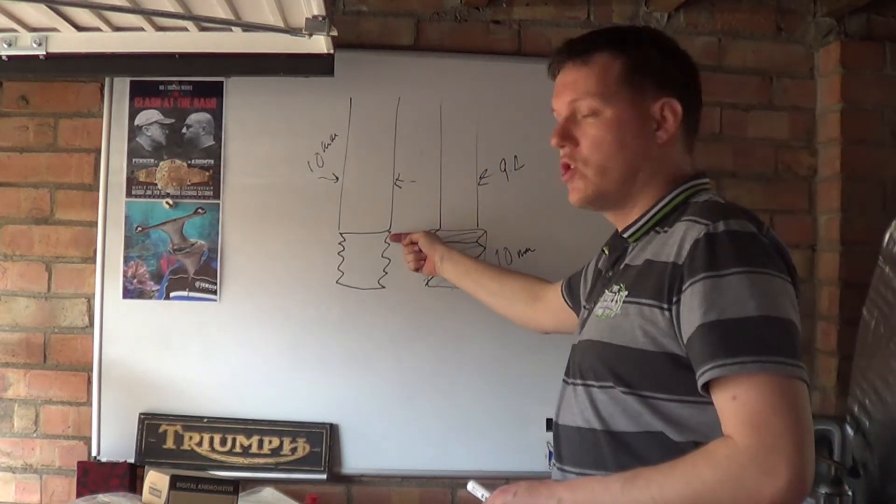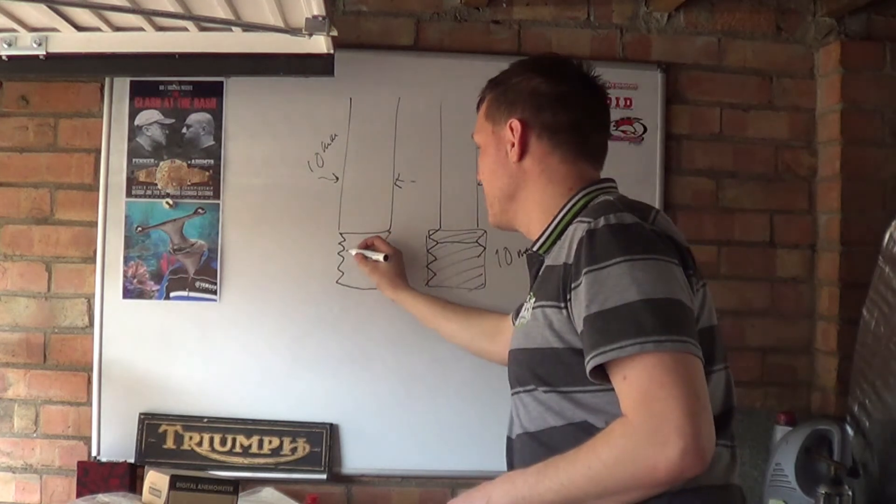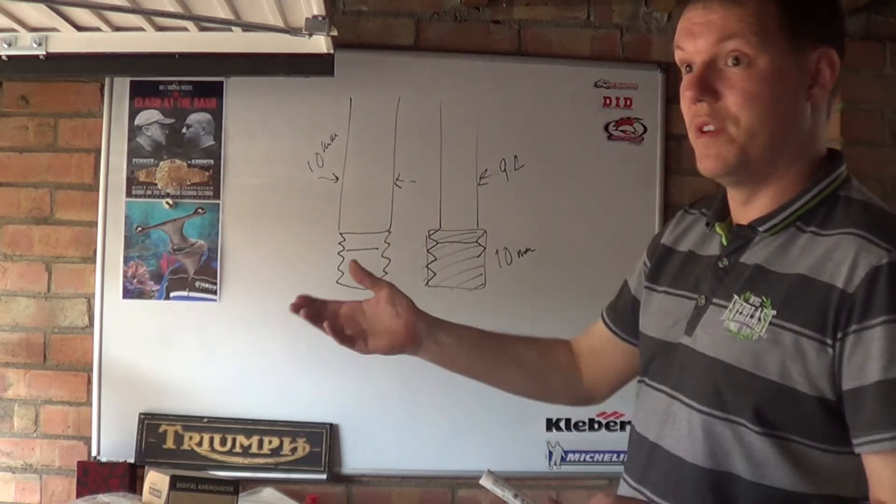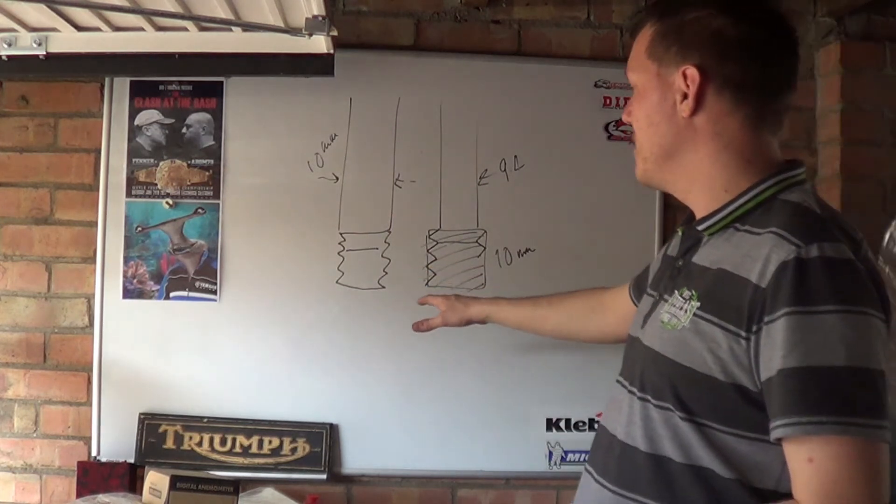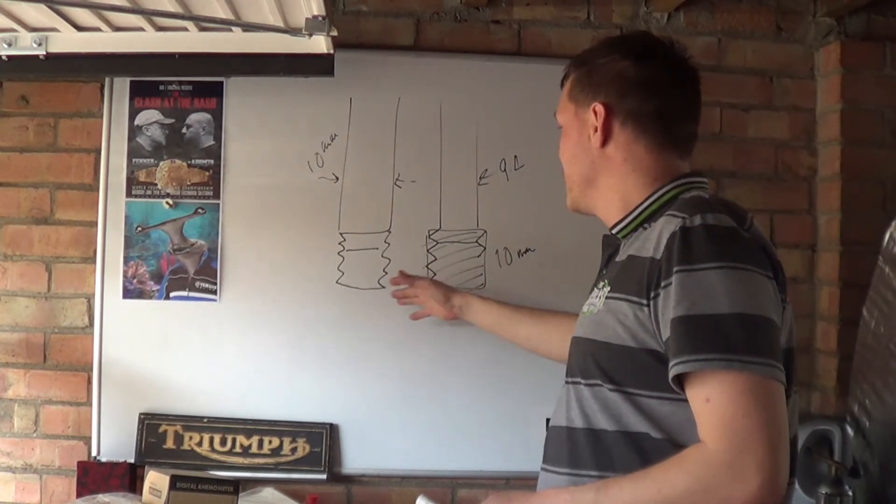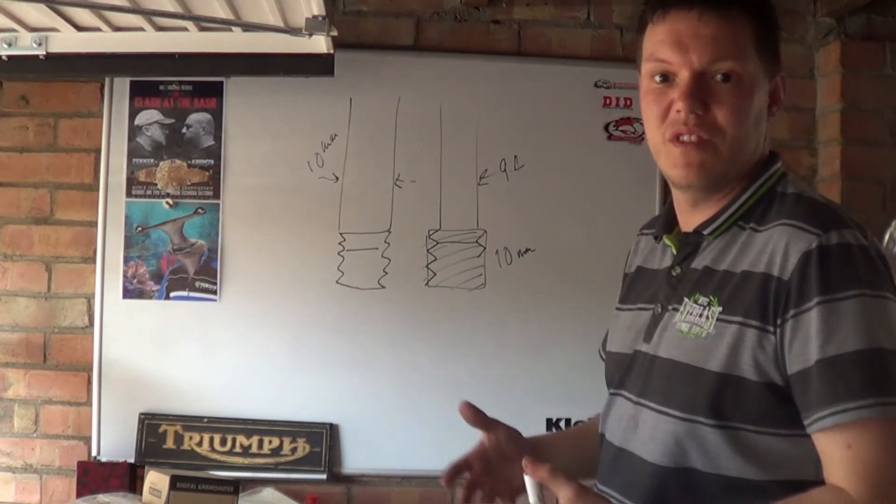All you've done is you've just chopped out material so the bolt is still weakest because you've got the same thread, this is a 10 millimeter thread and this is a 10 millimeter thread, you have the same thread minor diameter so the fastener itself is still the weakest.